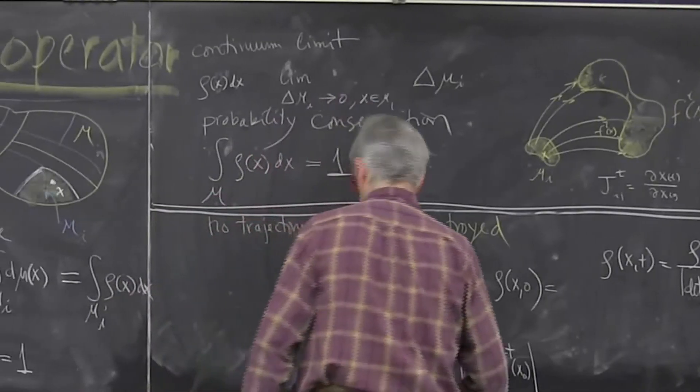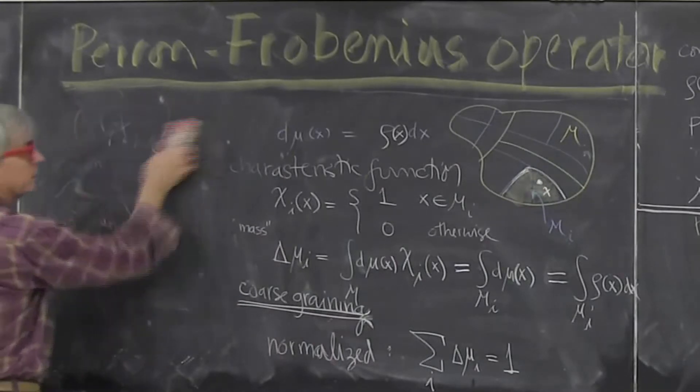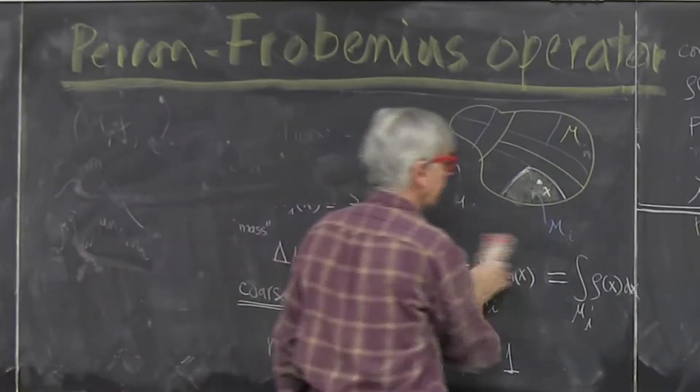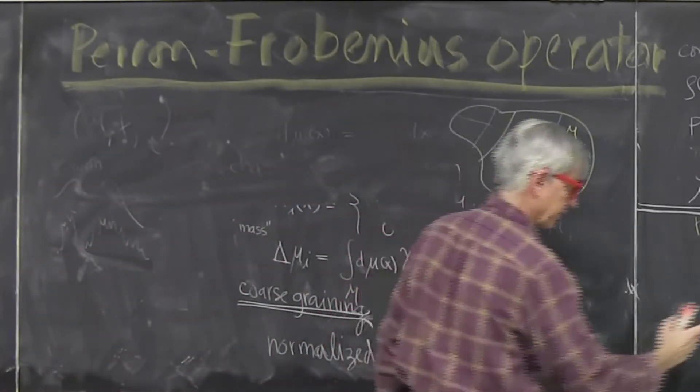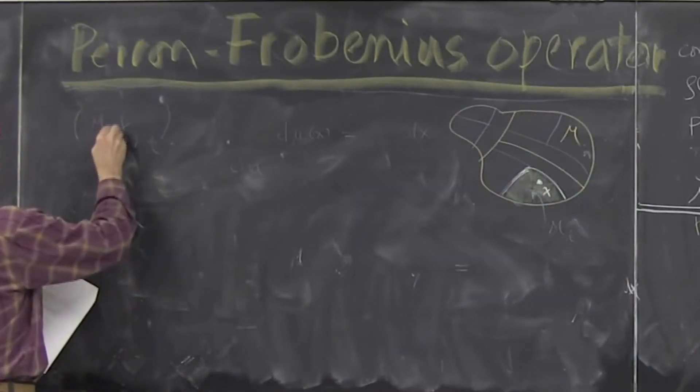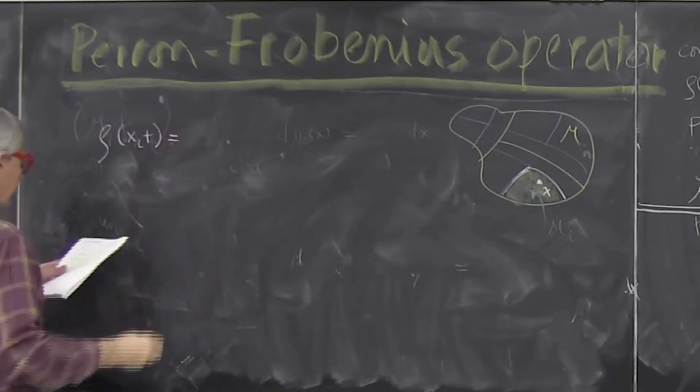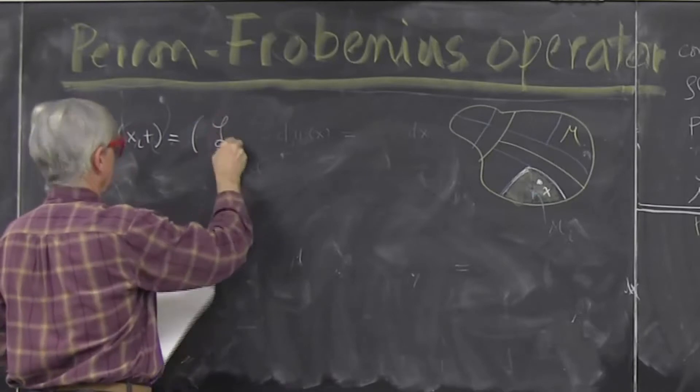And now just a little bit of magic we rewrite this by inserting identity into this evolution formula. Density at time t